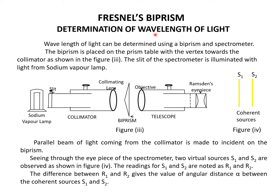One application of Fresnel's biprism is the determination of wavelength of light. The wavelength of light can be determined using biprism and spectrometer. The biprism is placed on the prism table with the vertex towards the collimator, because the slit of the collimator is illuminated by sodium vapor lamp. The incident light is allowed to fall on the vertex, so the biprism is arranged on the prism table accordingly.